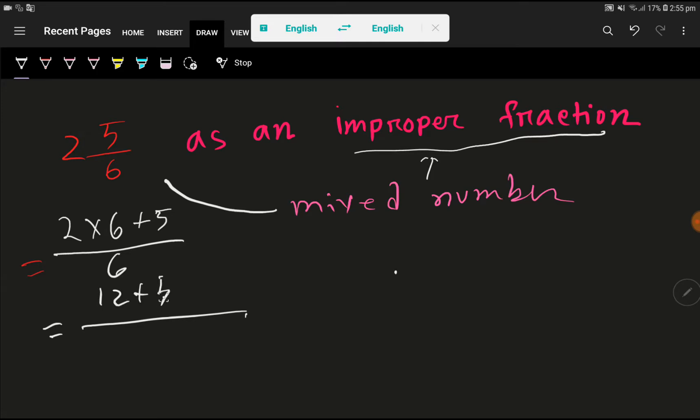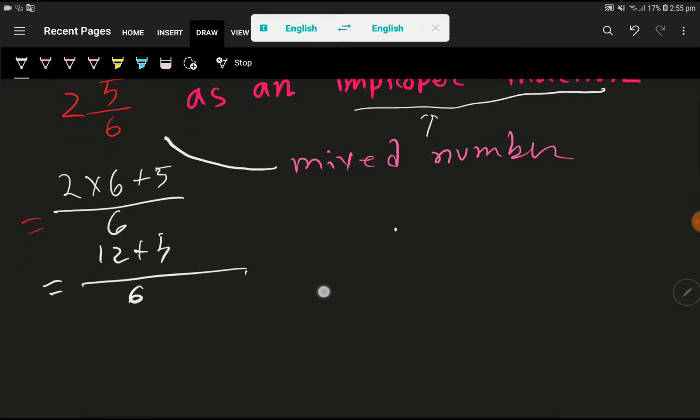So we are getting here 12 plus 5, that is 17, divided by 6.